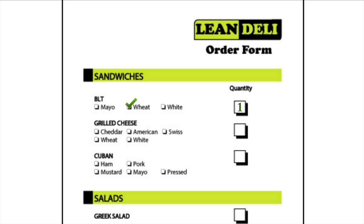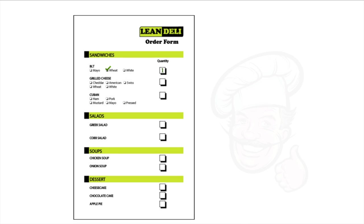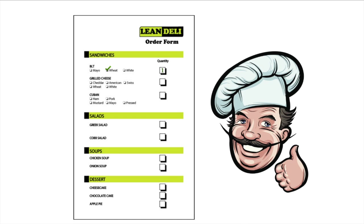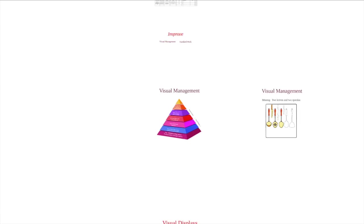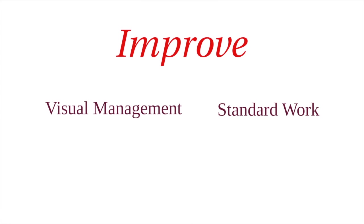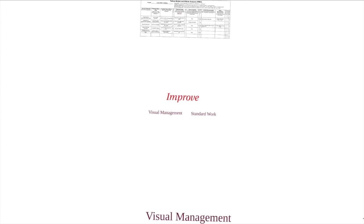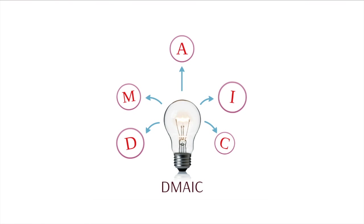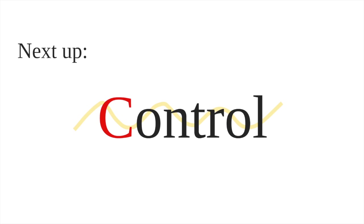We've also eliminated the time the cook has to spend deciphering the order. By having a standard order form, wrong orders are reduced. Using visual management and standardized work, the improvements made during the improve phase become easier to sustain. They also allow you to better control a process, which is the next and last phase in the DMAIC methodology.